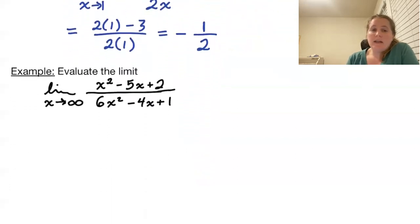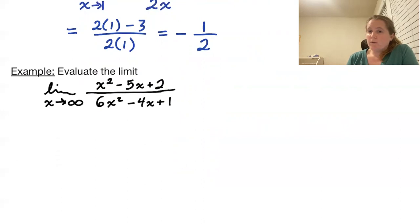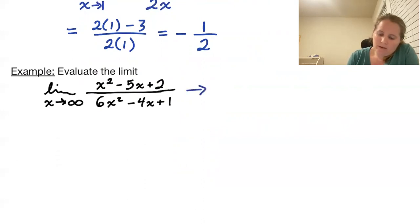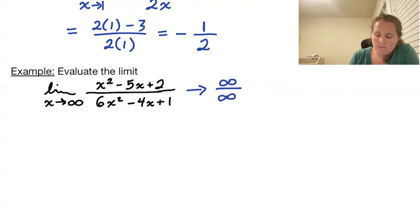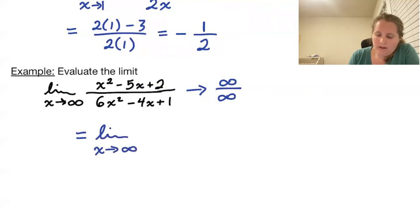Next, let's look at limits at infinity. If we wish to find the limit as x goes to infinity of (x² - 5x + 2) over (6x² - 4x + 1), we could use our rules for limits at infinity with rational functions, or we could use L'Hopital's Rule. Plugging in infinity gives infinity/infinity, so we take derivatives and look at the limit as x goes to infinity of (2x - 5) over (12x - 4).